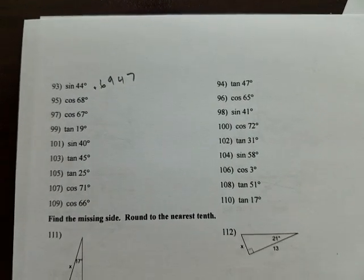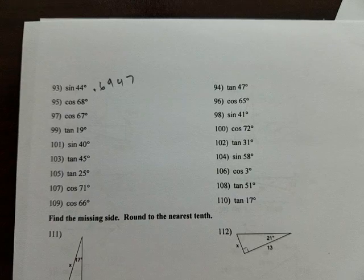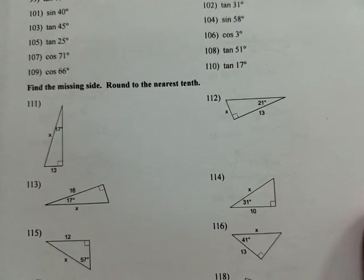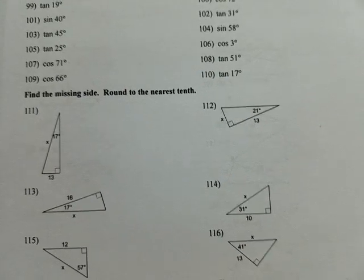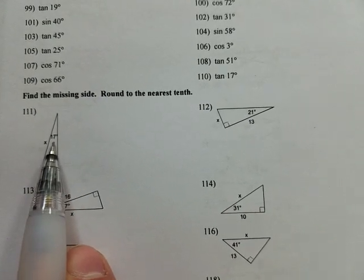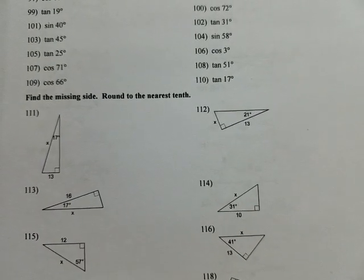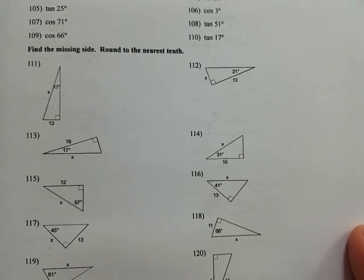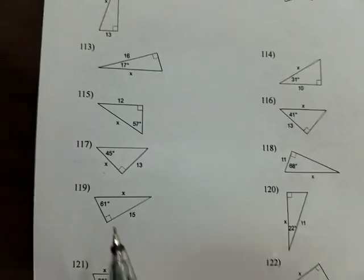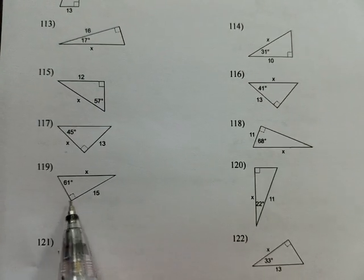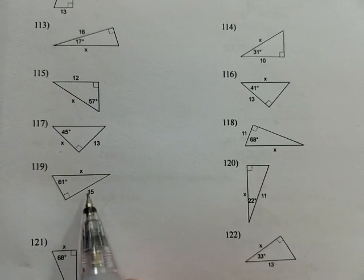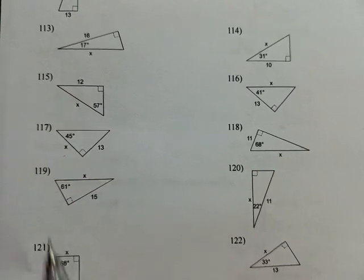All right, so once we know that decimal, then if we're given an angle in a triangle, like this next section where we're supposed to find the side, we can find out a trig function of the angle, and that's just a decimal. So for instance, if we look at 119, we have a right triangle with a 61 degree angle, one leg that's 15, and the hypotenuse is X, so we want to find it.